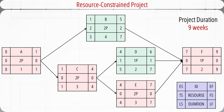Let's see an example. This is a software development project network with six activities, from A to F. Each activity is represented by a 9-cell block, with the legend shown at the bottom right corner. For activity A, its early start time is 0, early finish time is 1, late start time is 0, and late finish time is 1. It has no total slack or free slack, and it needs two programmers to finish the job in a duration of one week. Other blocks can be read in a similar way.